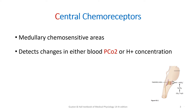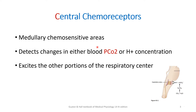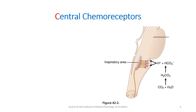The key point to remember is that central chemoreceptors detect carbon dioxide — remember it as C and C. After they are excited, they will excite the other portions of the respiratory center. Here is a diagram showing the central chemoreceptors and the medullary chemosensitive area, which detects the levels of carbon dioxide indirectly.